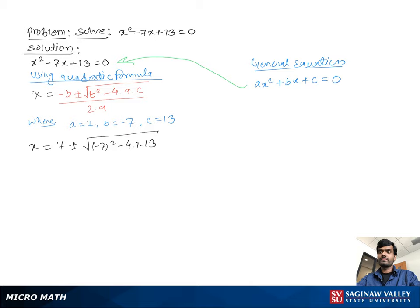Substituting these values into the quadratic formula, we get x equals 7 plus or minus the square root of negative 7 squared minus 4 times 1 times 13, all over 2 times 1.